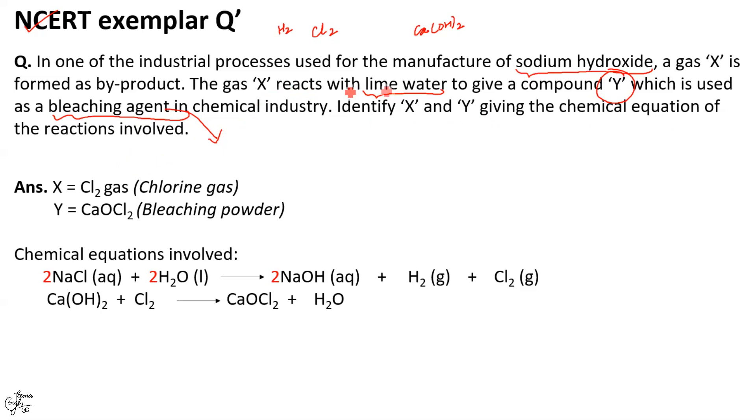So, since the gas X reacts with lime water, so it is not hydrogen but chlorine. So your X is equal to chlorine gas and Y is going to be your bleaching powder with formula CaOCl2. Give the chemical equations involved.